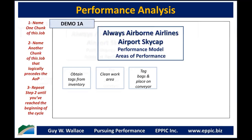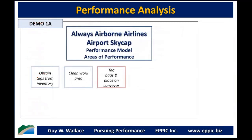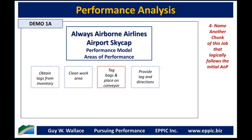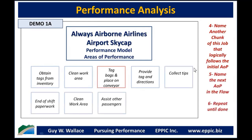So the first part of the job is: get tags from inventory, go to the work area, clean it up, then tag bags and place them on the conveyor. Then I go downstream — what do you do after that? We provide the tag to the customer and give them directions to their flight, terminal, gate, et cetera. And we try to collect a tip. Then there's end-of-shift paperwork. My point: you place a stake in the ground with one area of performance, go upstream to the start of the whole thing, then go downstream, and the acid test is: is there anything you do in your job that isn't captured in the details of these chunks?